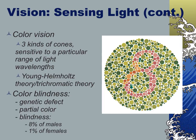Young-Helmholtz was a theorist who basically argued that there are three kinds of color cones sensitive to different ranges of wavelengths of light. Light has a spectrum of different wavelengths. The image shown is basically a test of color blindness using these three kinds of cones that may be picking up different types of light. It's called the trichromatic theory — tri meaning three — by Young-Helmholtz.